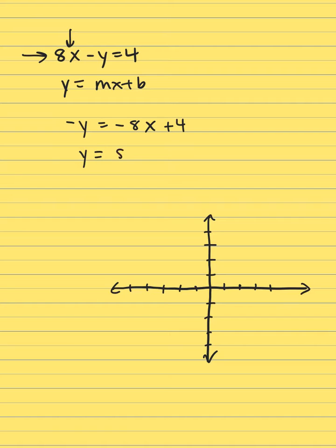So y equals 8x minus 4. The slope is 8, and the y-intercept — which is recognized as b — is negative 4.